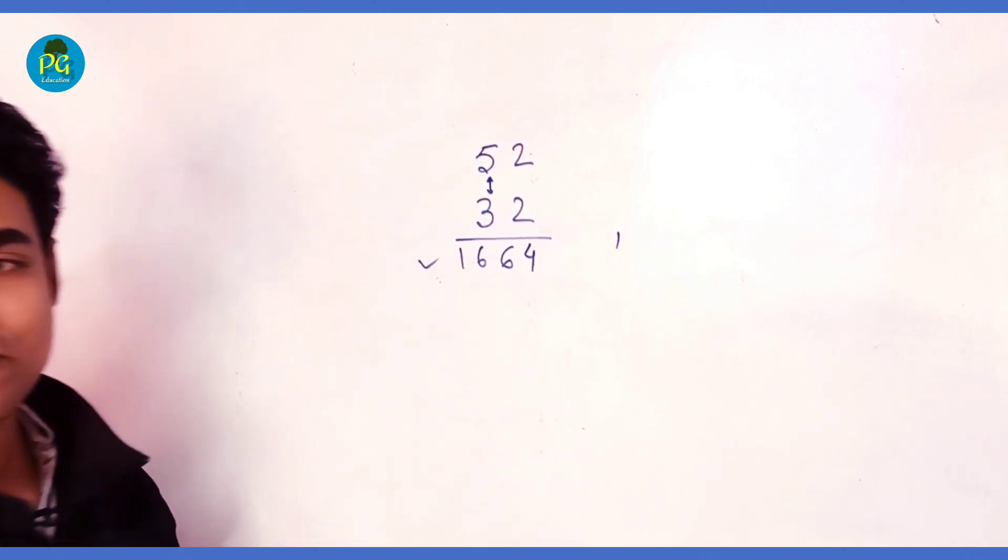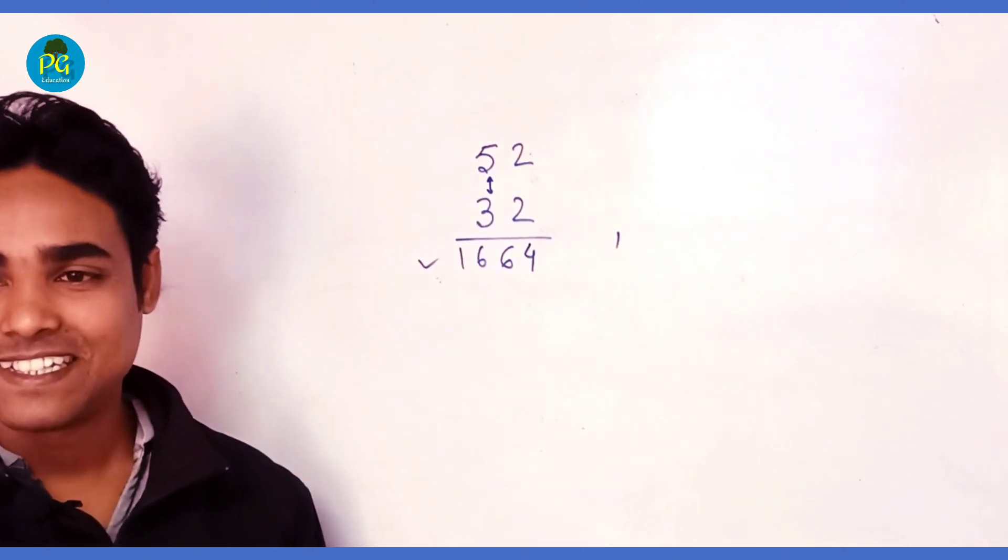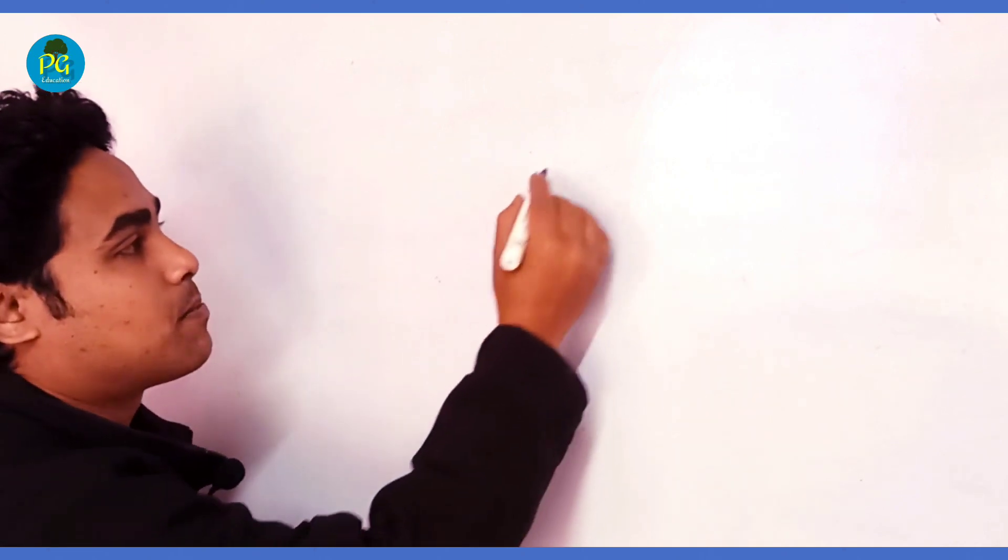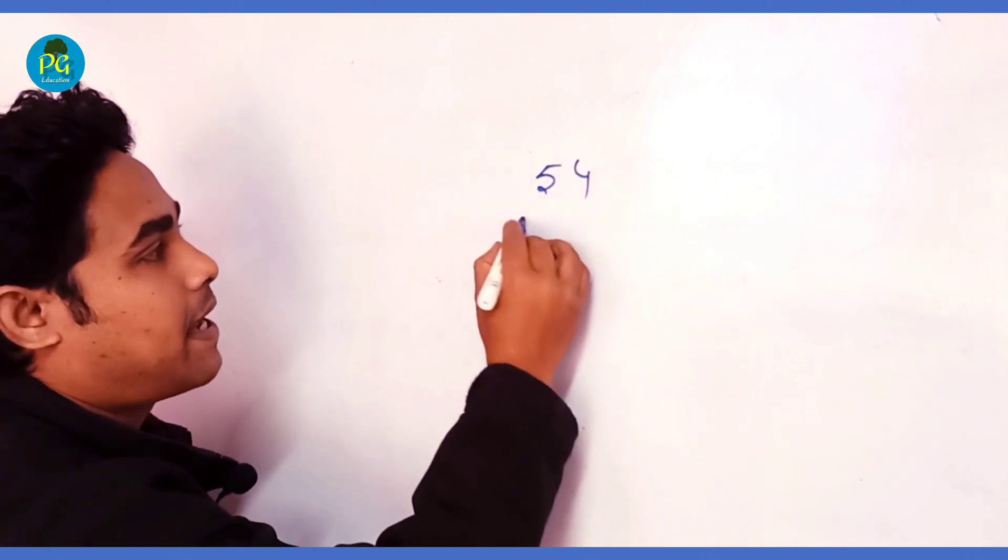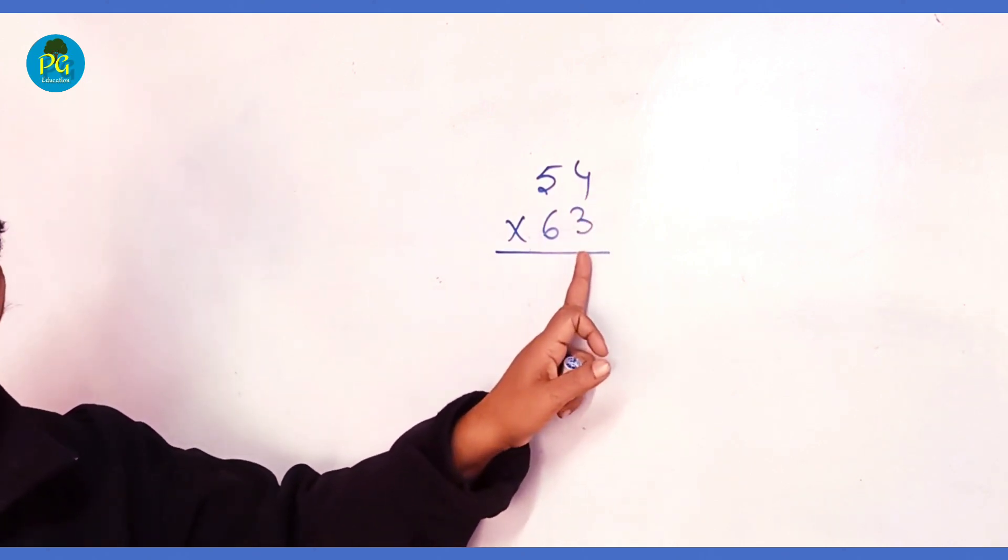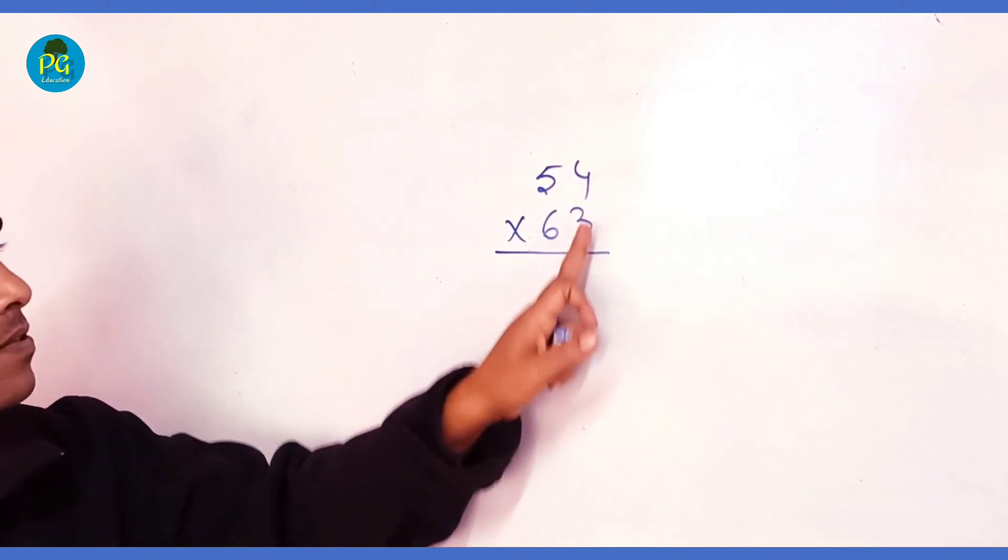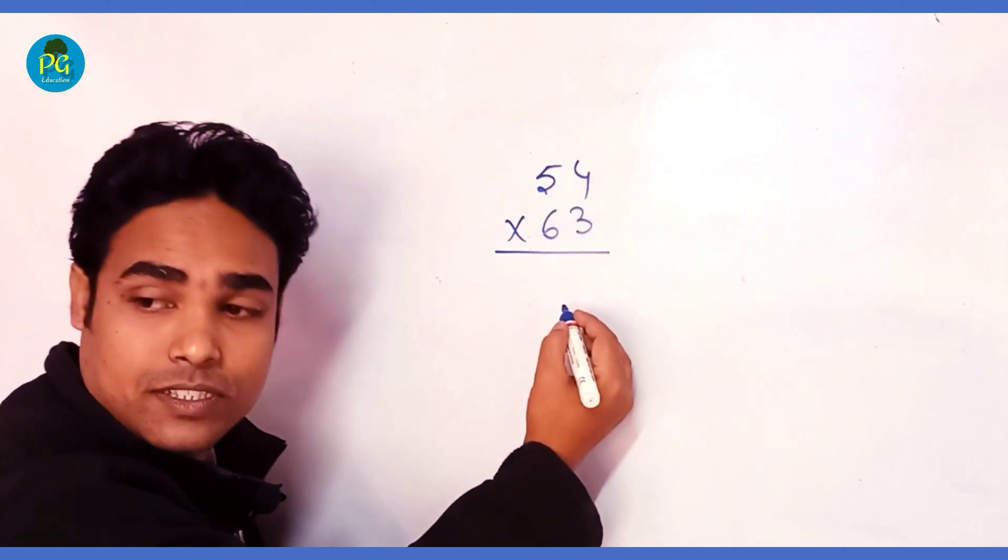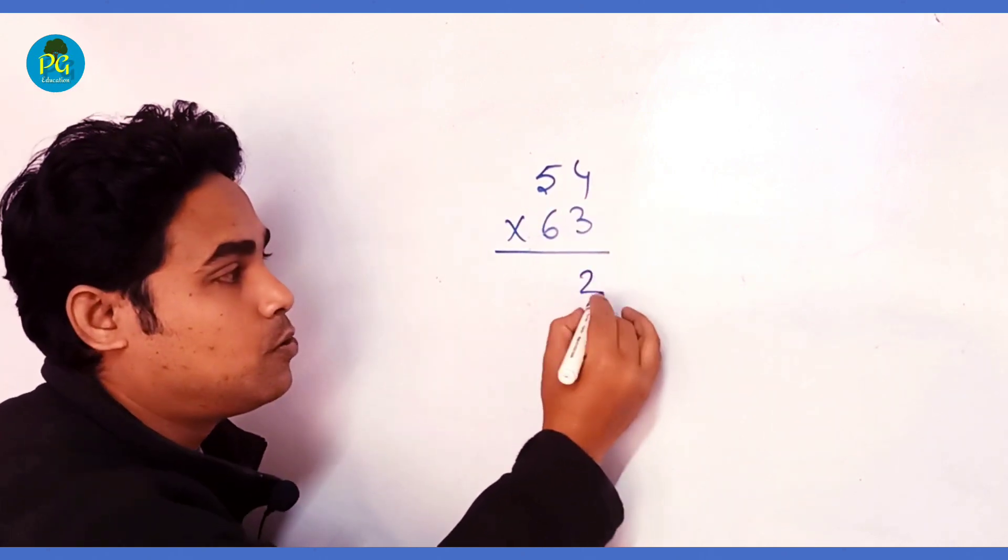Very easy friends, I hope you understand. Let us take another example. Suppose it is 54 and 63. Now you say what to do. First multiply 3 into 4, so 3 into 4 is how much? 12, write 2, 1 in hand.